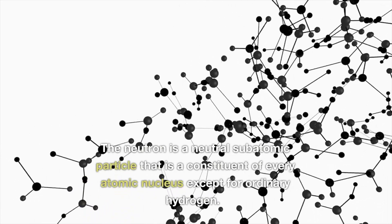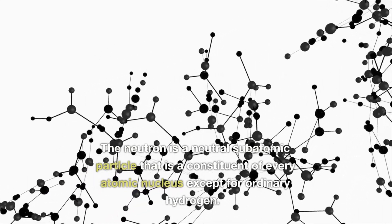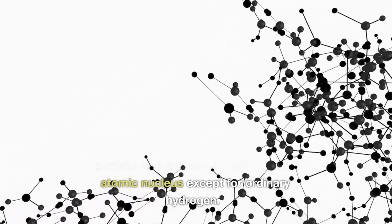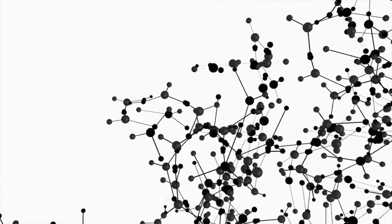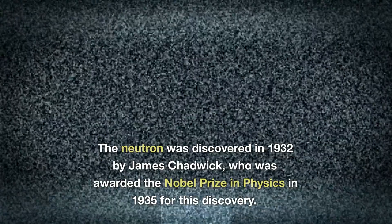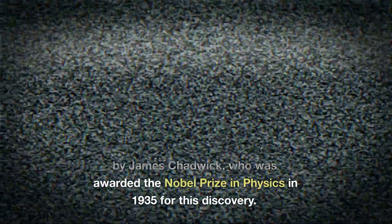The neutron is a neutral subatomic particle that is a constituent of every atomic nucleus, except for ordinary hydrogen. The neutron was discovered in 1932 by James Chadwick, who was awarded the Nobel Prize in Physics in 1935 for this discovery.